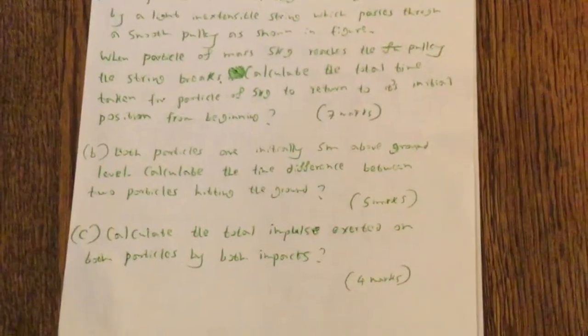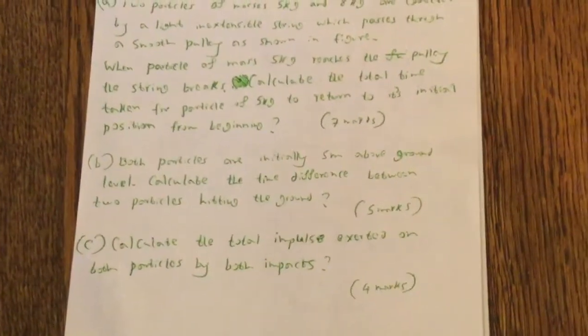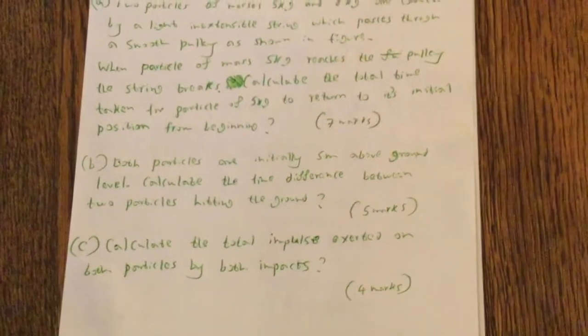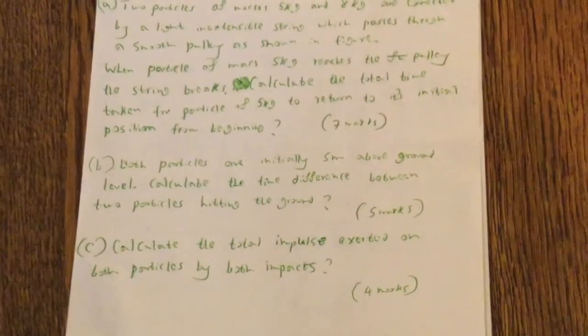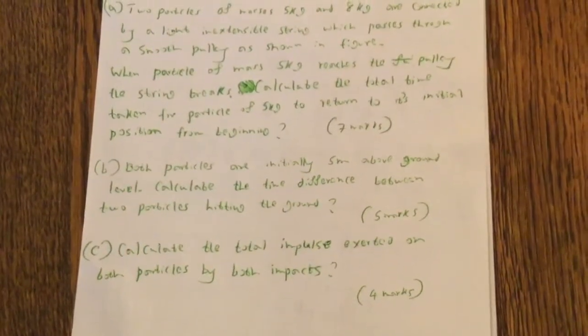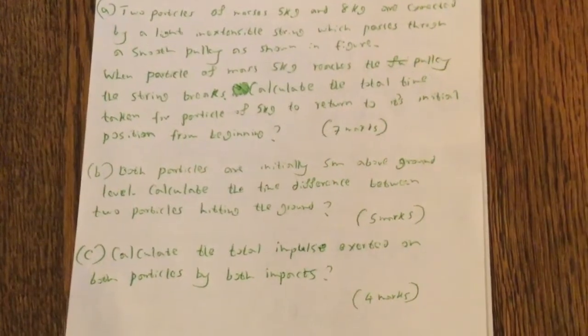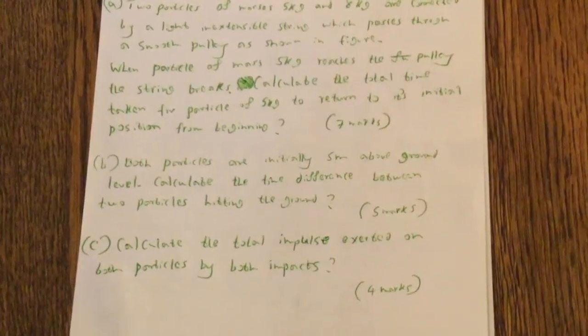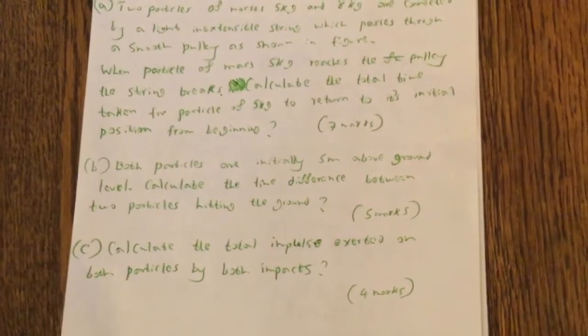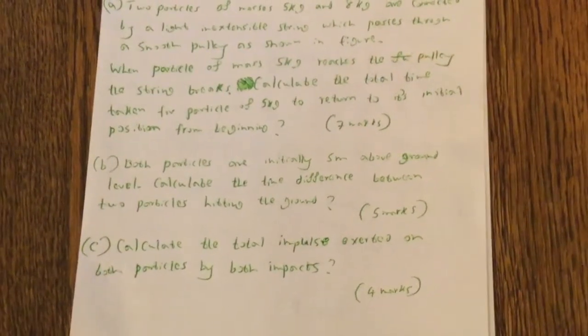Question B. Both particles are initially 5 meters above ground level. Calculate the time difference between two particles hitting the ground. Question C, calculate the total impulse exerted on both particles by both impacts.